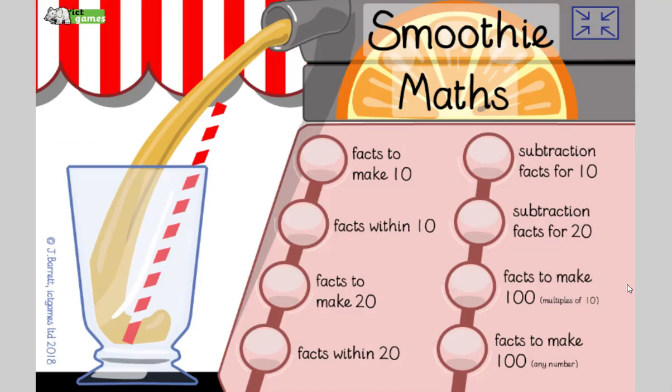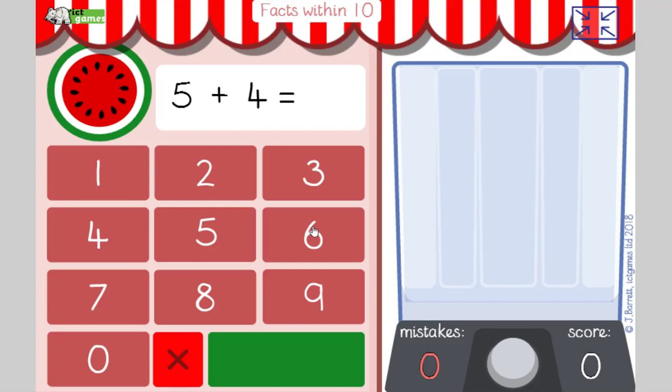Okay. Last job. I'm going to put the link to this game in the description box below. Year ones, if you fancy something extra to do, why don't you practice ways of making numbers within, facts within ten? Year twos, you practice facts within twenty. Okay, I'm going to do facts within ten. I think we've got two minutes to answer as many as we can. Here's the timer. Two minutes to answer as many as we can to make a lovely fruit smoothie.